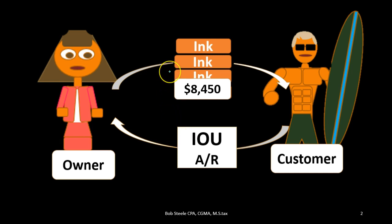The second component — we can think of it as a separate journal entry — would be the reduction in inventory and the related cost of goods sold: the fact that we're giving away the ink and recording the expense related to it. So we think of the first journal entry as removing the inventory component as if we were solely a service company, and then a second journal entry being the inventory component.